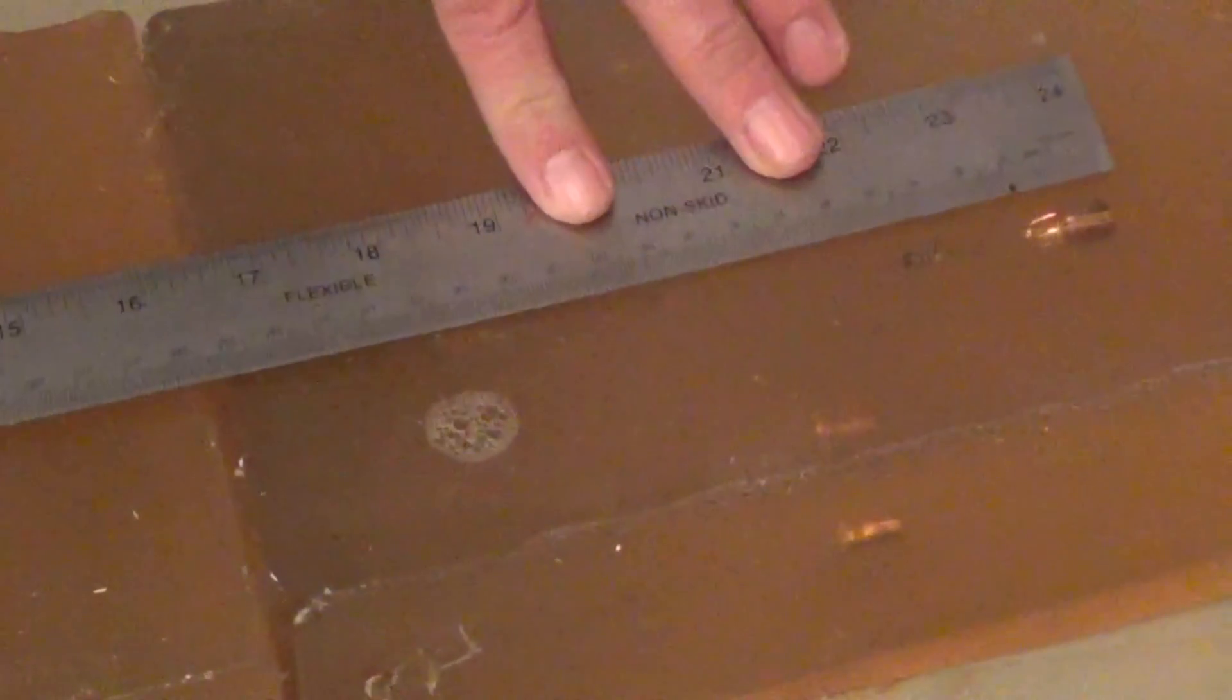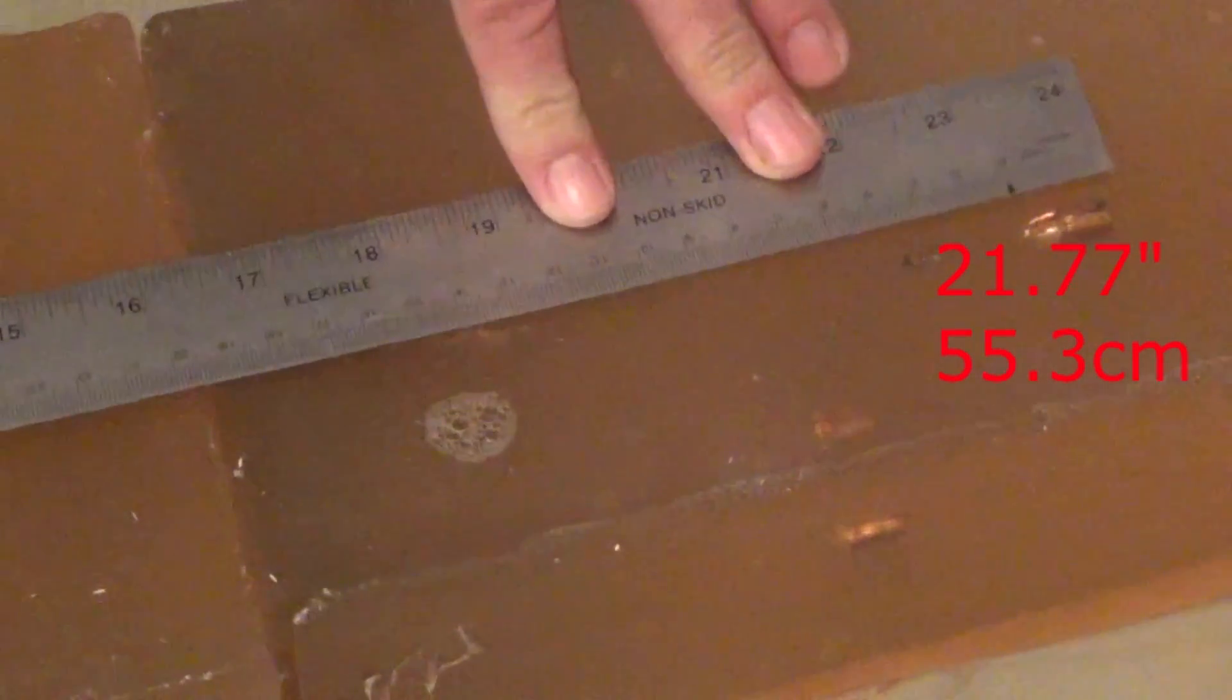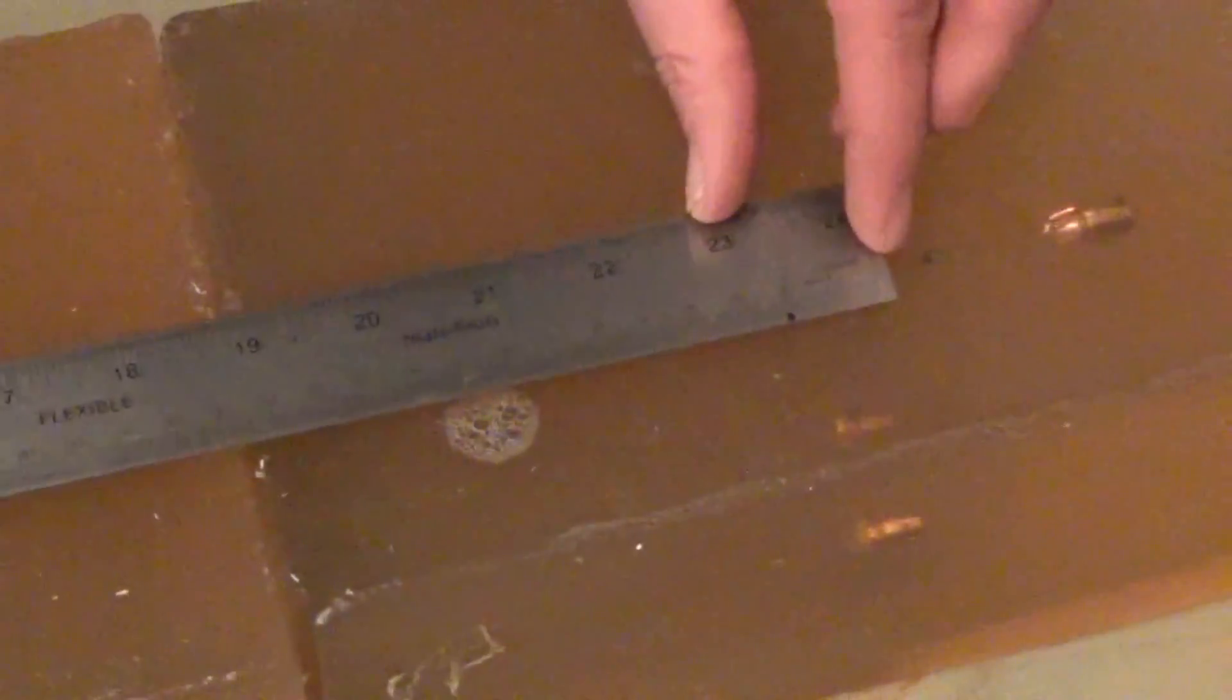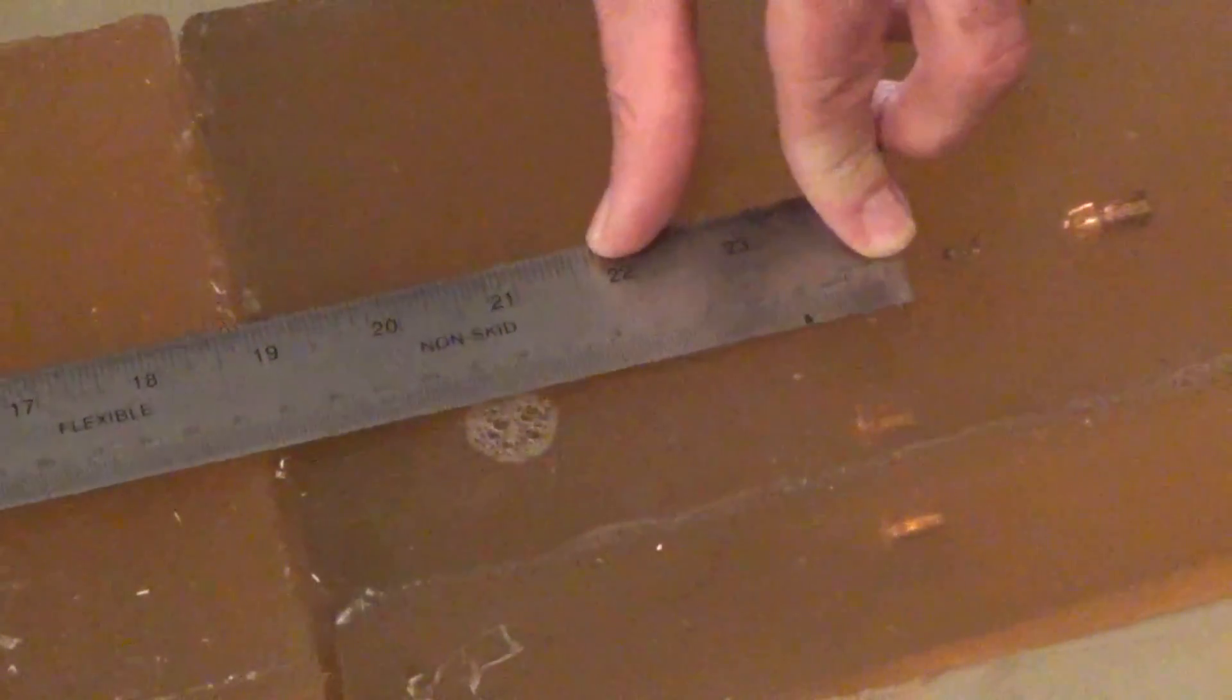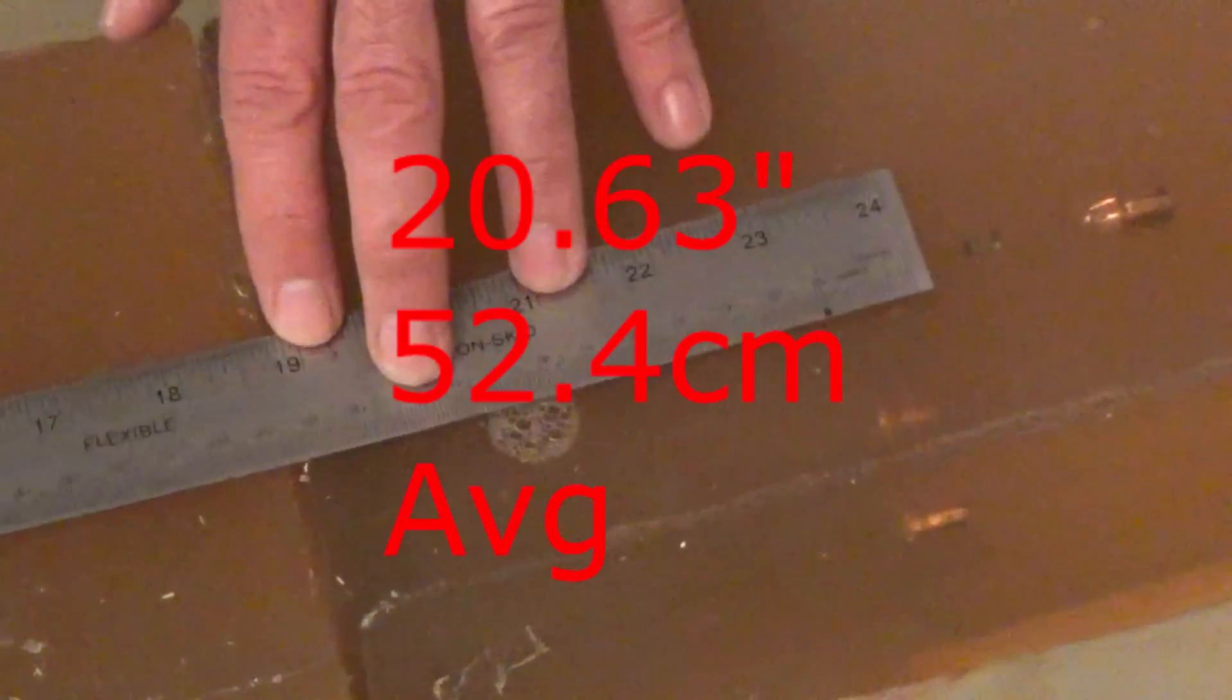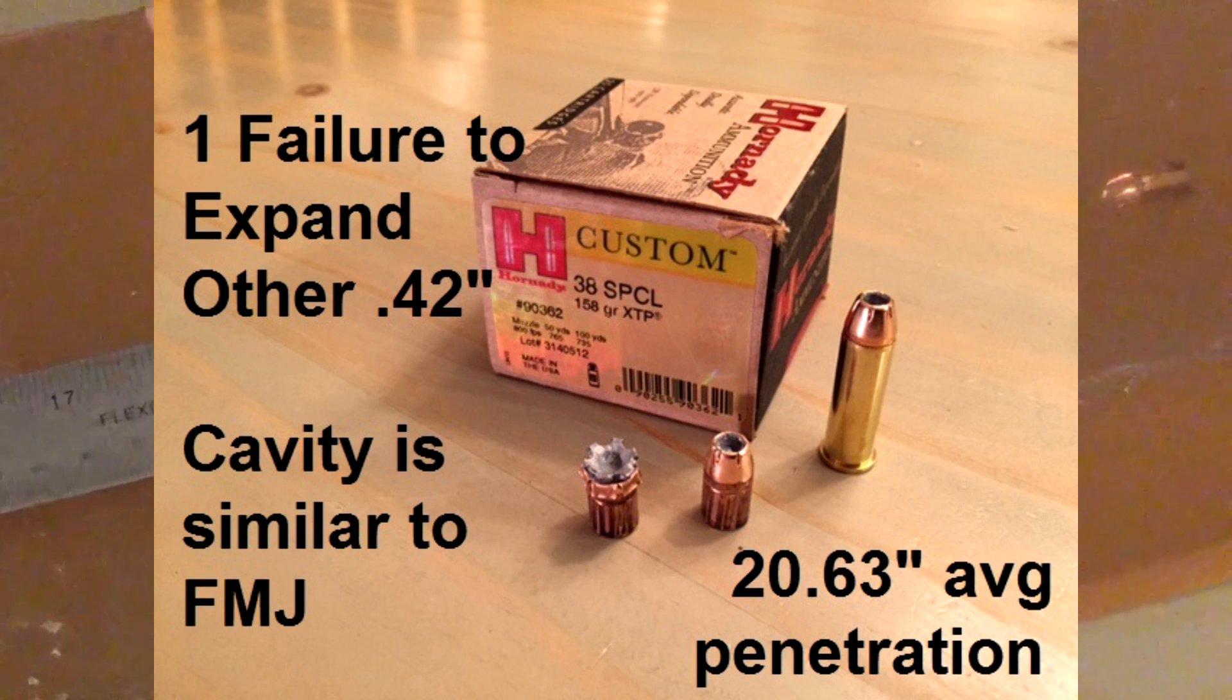The deep one, it went in 53.3 centimeters, that's 21.77 inches. And this one right here that was a little more shallow, that one went in 49.5 centimeters, or 19.48 inches. So, on average, those penetrated 52.4 centimeters of ballistics gel, or 20.63 inches.